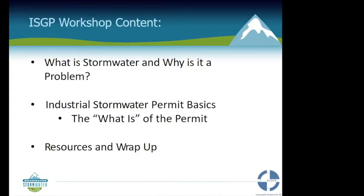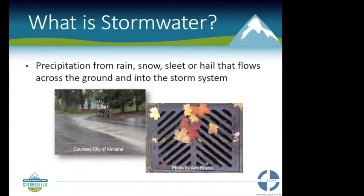Today we're going to talk about stormwater and why it's a problem, the SWIP, sampling, BMPs, and resources and wrap-up. This is a high-level overview. First, it's important to understand what stormwater is: it's rain, snow, hail, sleet, whatever. After it melts, it flows across the ground and into the storm system.